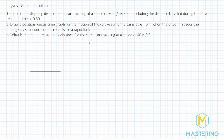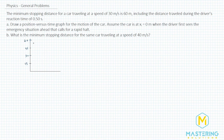For part A, we need to draw a position versus time graph for the motion of the car, and we'll assume that the car is at x equals 0 meters right when the driver first sees the emergency situation. So right when they see it, we'll call that x is 0. The minimum stopping distance is 60 meters, so we know that the car will end up at 60 meters.